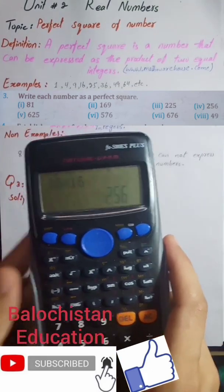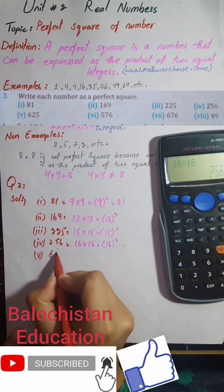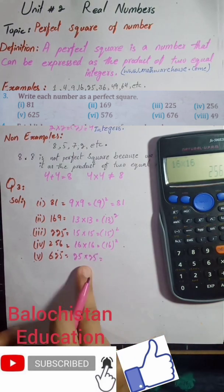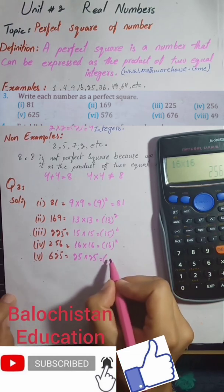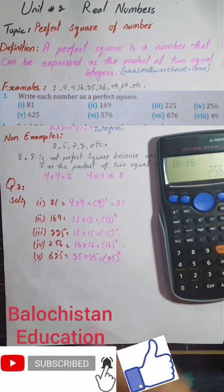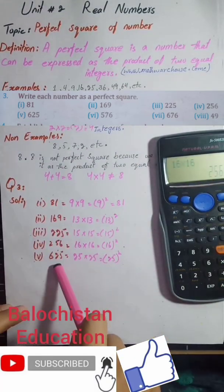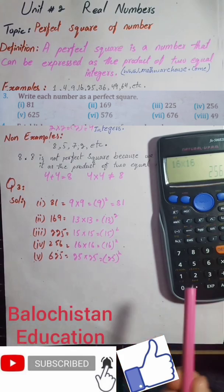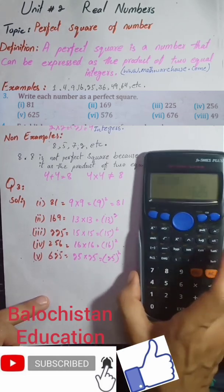The next number is 256. If we multiply 16 by itself, we find the answer 256, confirmed by the calculator. Next, option five is 625. See, 25 multiplied by 25 gives two equal integers, and the result is 625. This number is known as a perfect square, as proven by our definition: a perfect square is a number that can be expressed as a product of two equal integers.